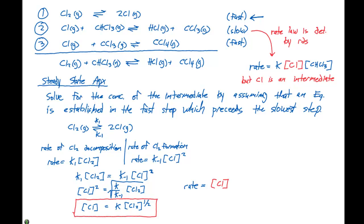which was an intermediate, times the concentration of CHCl3. So we simply need to plug this into here, and in doing so, we get that the rate is gonna be equal to K times the concentration of Cl2 to the 1/2 power times the concentration of CHCl3.